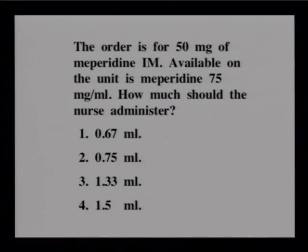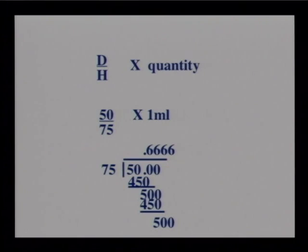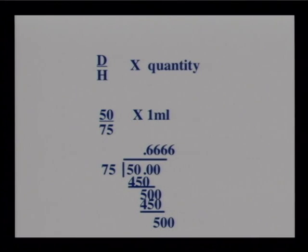Next problem: the order is for 50 milligrams of meperidine IM. Available on the unit is meperidine 75 milligrams per milliliter. How much should the nurse administer? The correct answer is 0.66 or 0.67 milliliters. This is desired over have times quantity: you desired 50 mg, you had 75 mg per 1 mL. Divide 50 by 75 — or note that 25 goes into 50 twice and into 75 three times, giving two-thirds or 0.67 mL.